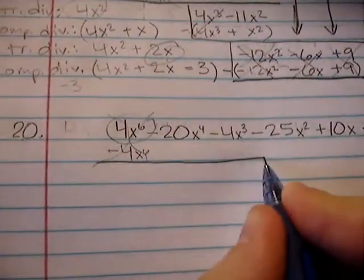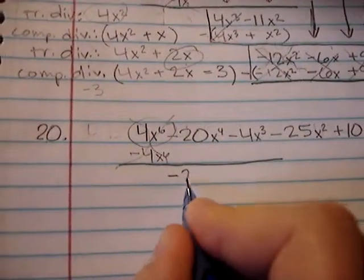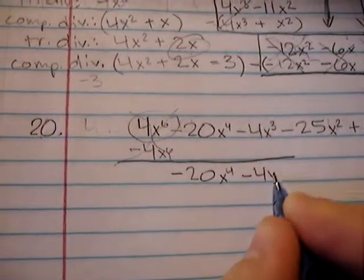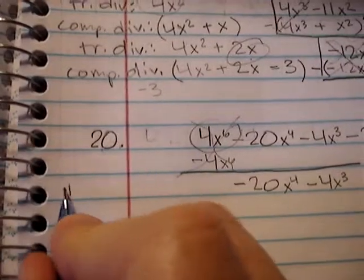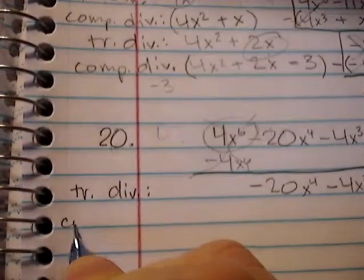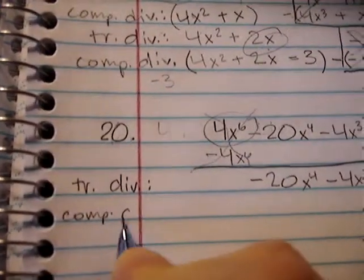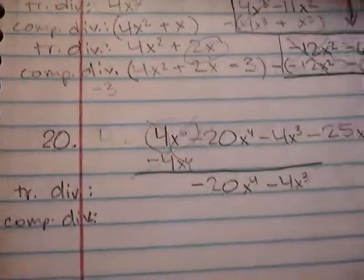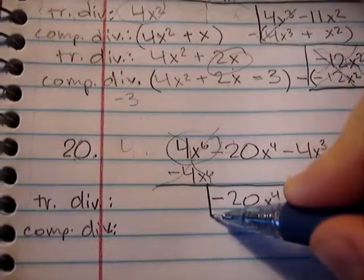All right, bring down our next two remainders. Negative 20x to the 4th minus 4x to the 3rd. Write out your trial divisor. Write out your complete divisor. And let's separate it off right here.